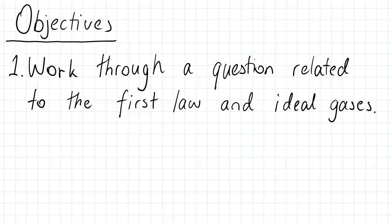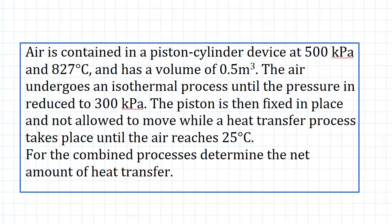Hi guys, and the objective of this video is to work through a question related to the first law and ideal gases. So we begin with our question. Our question states that air is contained in a piston-cylinder device at a pressure of 500 kPa and 827 degrees Celsius, and occupies a volume of 0.5 meters cubed.